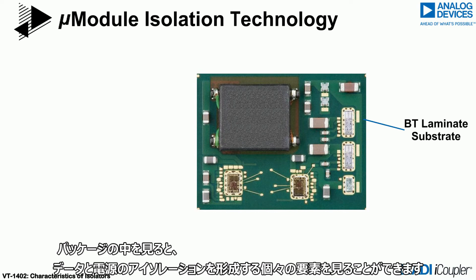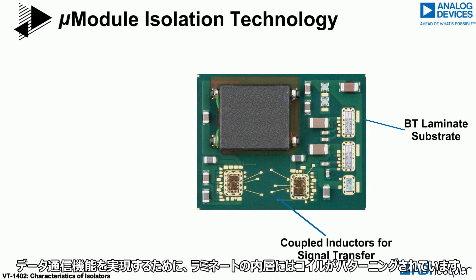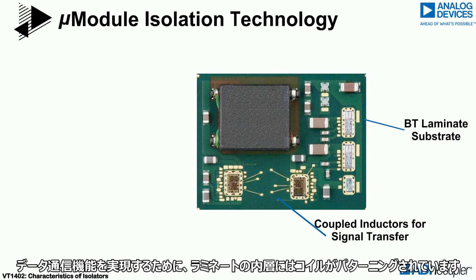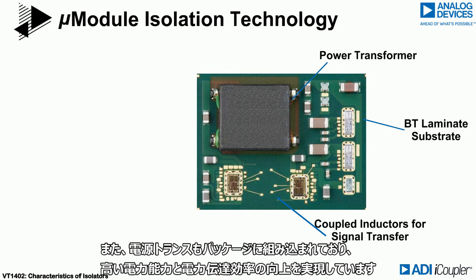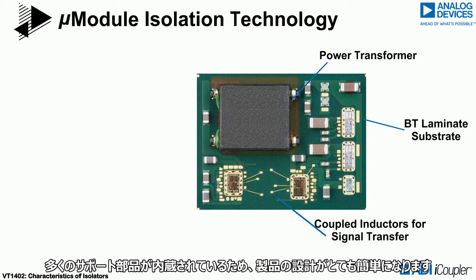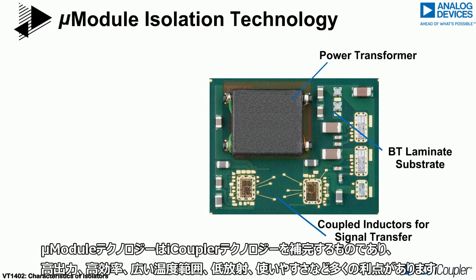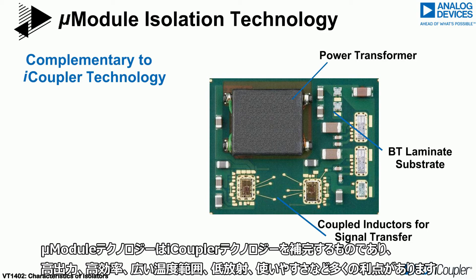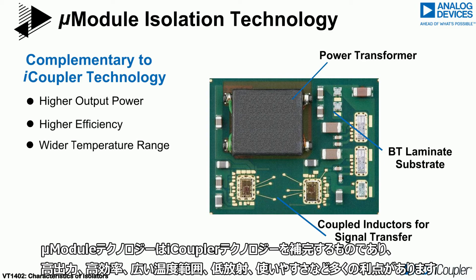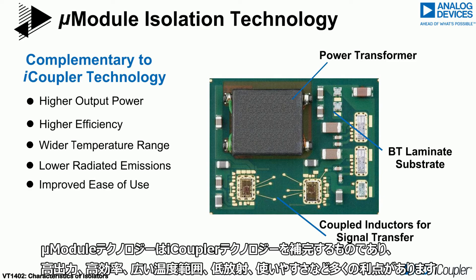If we look inside the package, we can see the individual elements that form the data and power isolation. Coils are patterned into the inner layers of the laminate to provide the data communication functionality. A power transformer is also integrated into the packaging, which provides high power capability and improved power transfer efficiency. Many support components can be integrated, making the products very easy to design with. Micromodule technology is complementary to i-Coupler technology, offering many benefits including higher output power, higher efficiency, wider temperature range, lower radiated emissions, and improved ease of use.